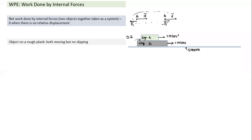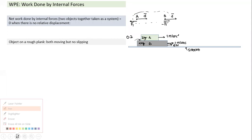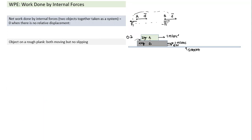If I apply a force of 6 N on B, the whole system gets an acceleration of 1 m/s². Taking them together as a system, friction force becomes internal. Friction acts forward on A and backward on B, with equal magnitude. Both have the same acceleration, so there is no slipping.